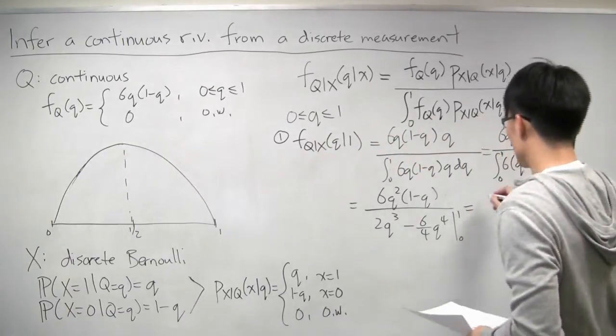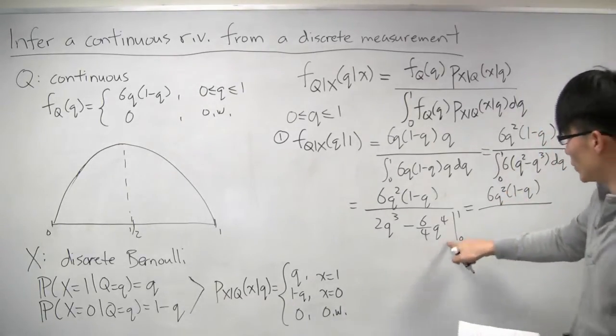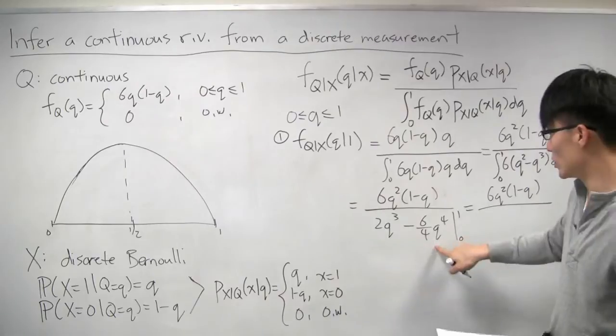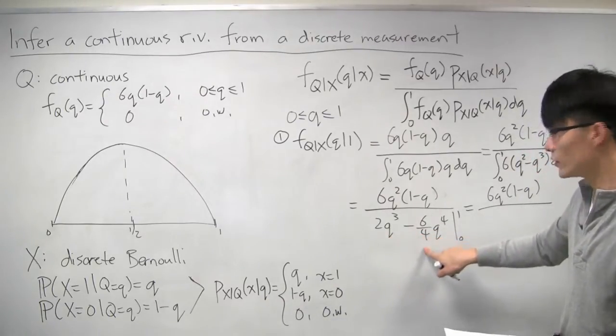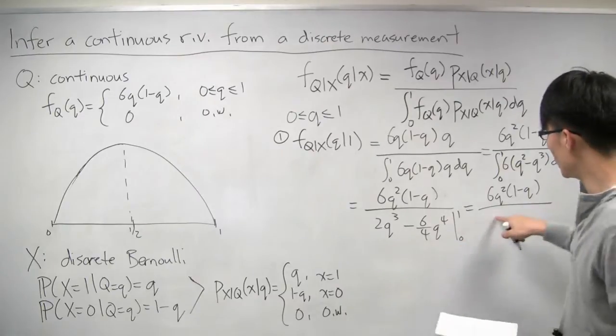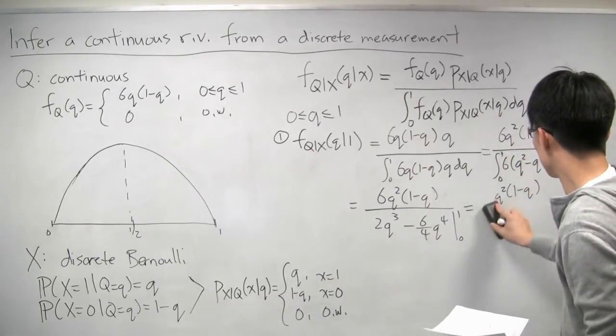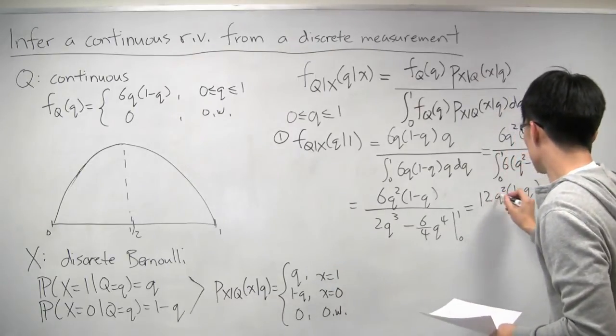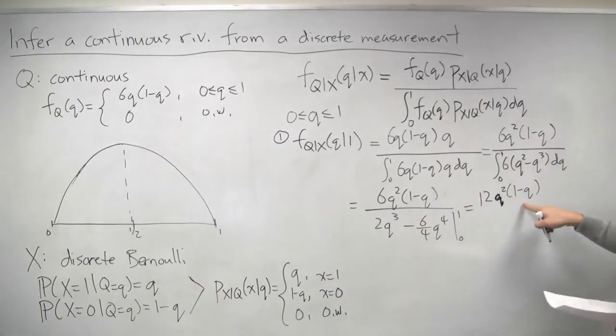And what does that give us? We get 6q squared 1 minus q still on the top. And the bottom, the 0 case where 0 is just 0. The case where it's 1, it's 2 minus 3 halves, so it's a half. So really, it just becomes 12q squared 1 minus q.